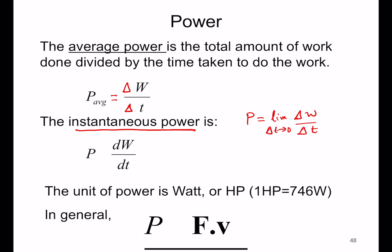And as we've discussed before, this is just the definition of a derivative. So it's dW/dt. So power, instantaneous power, is dW/dt at that particular instant.